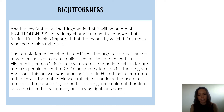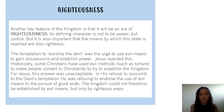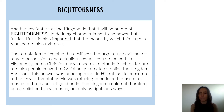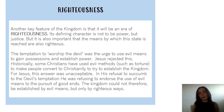A more modern day example of doing evil things to get what you want is that some Christians have used evil methods such as torture to make people convert to Christianity to try and establish the kingdom. So it's this idea that not only is the kingdom of God a righteous place, but in order to enter it and in order to bring it about, everything has to be done by the book. You can't cheat your way around it. Everything about this kingdom, especially how it is reached and how it is established, has to be righteous.